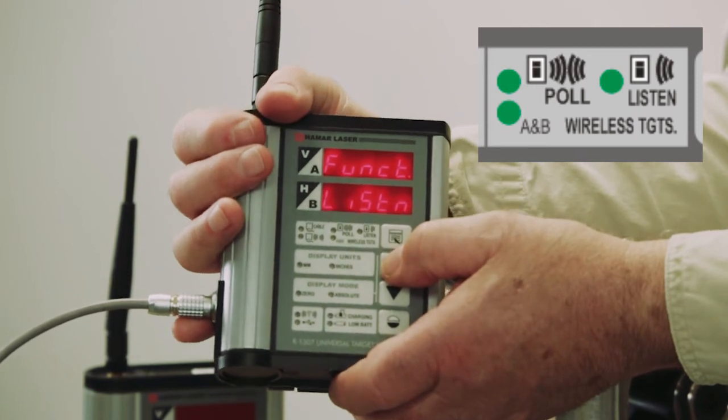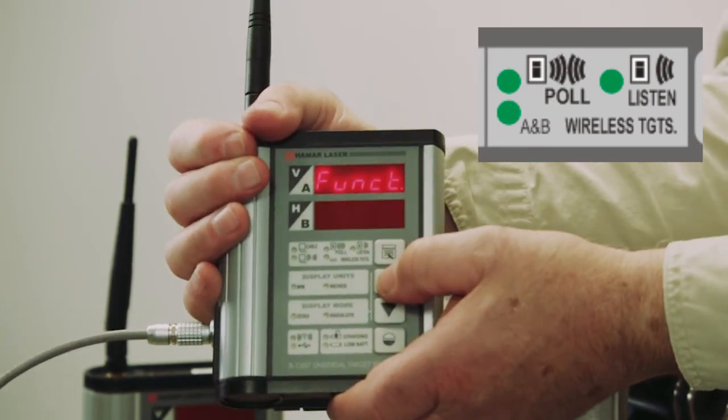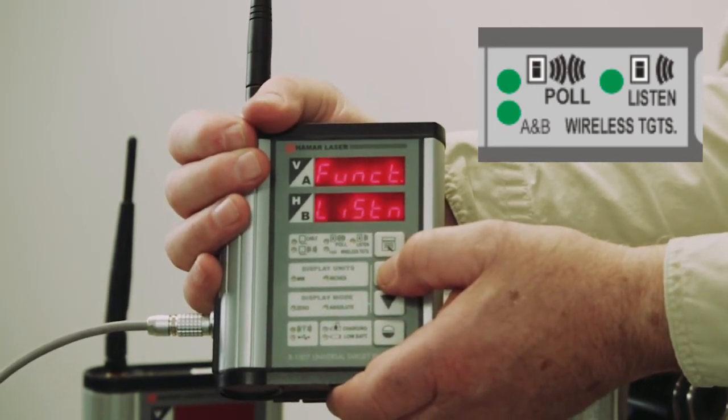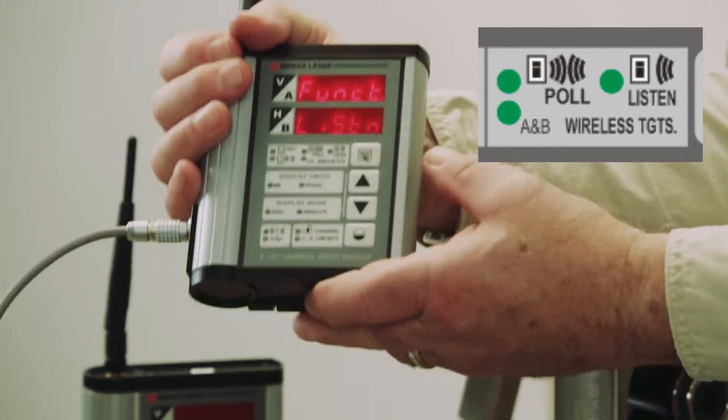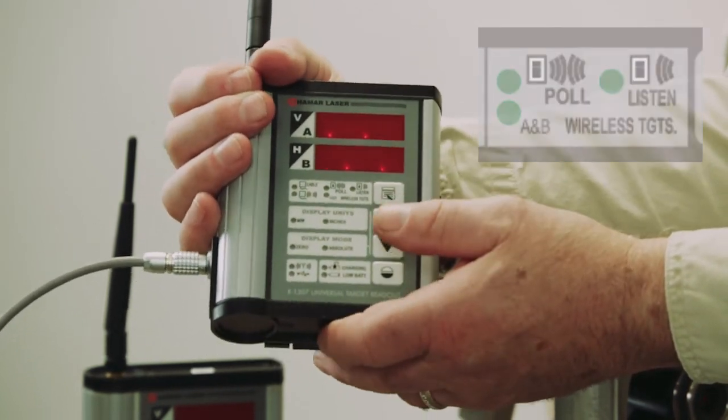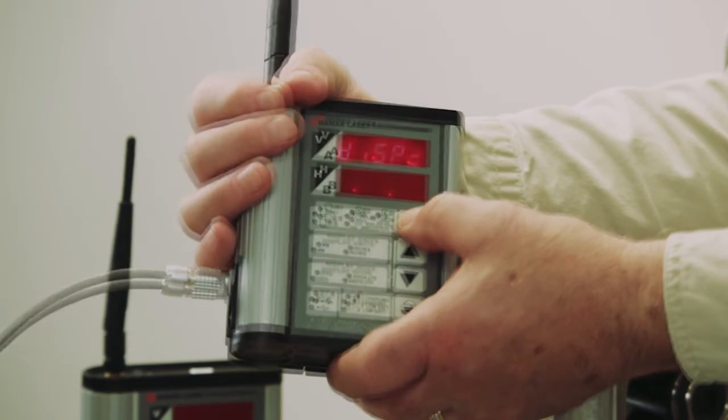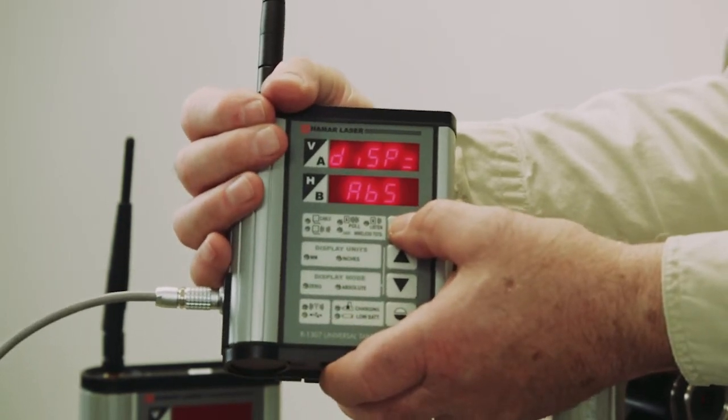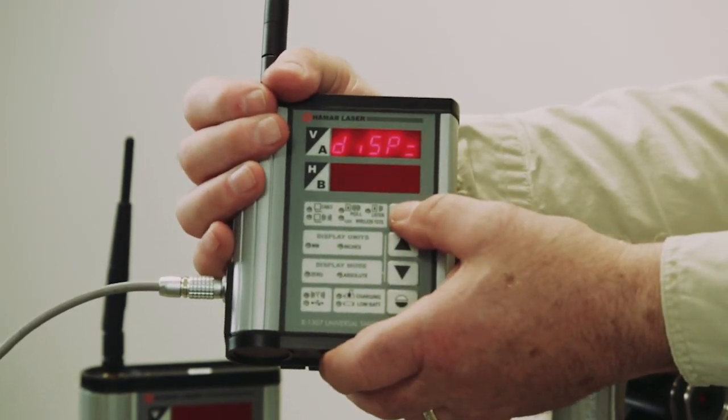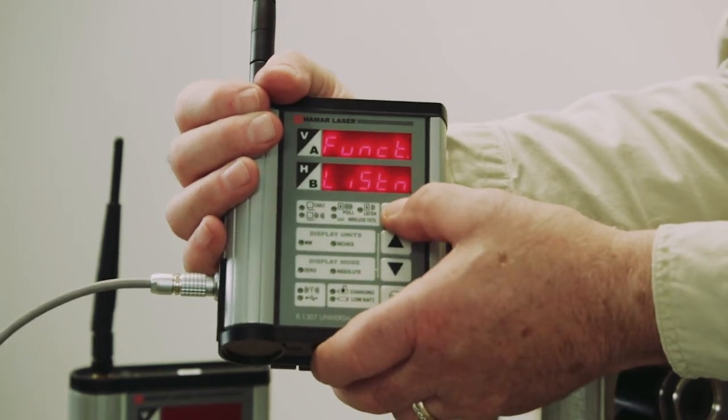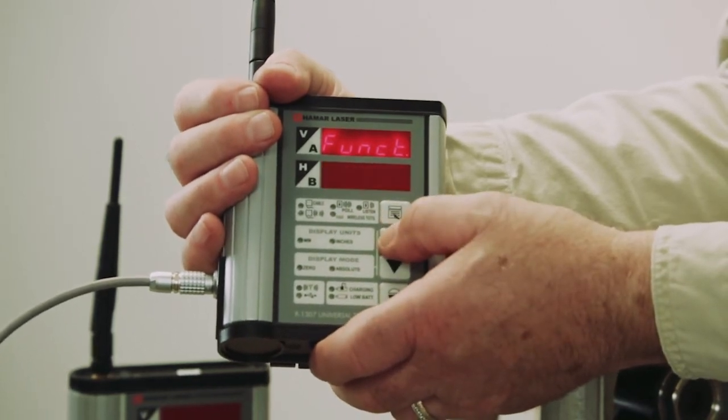I can change that also to listen. So if I have the A910 plugged into the computer, the computer is going to poll and this is going to listen for the response. If we're doing bore alignments with this and we have the target cabled, we want it at local. So I'll put that at local.